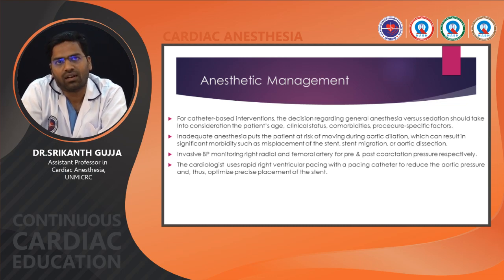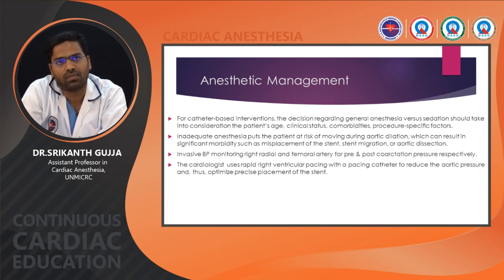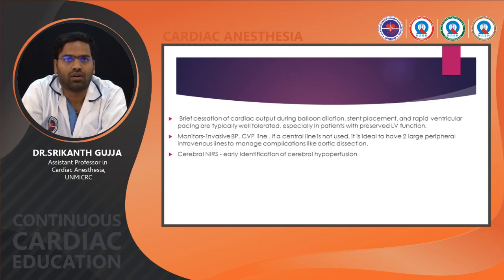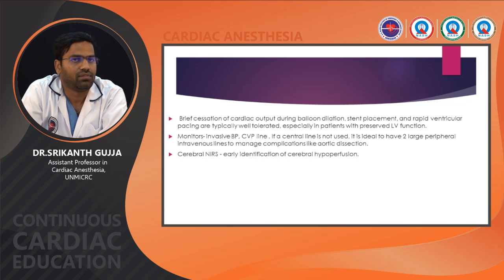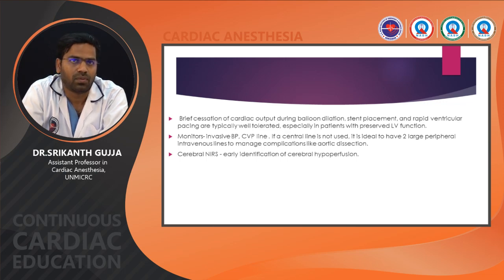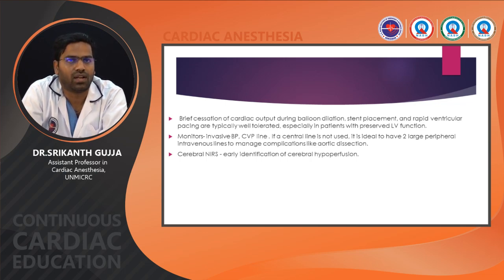Invasive BP monitoring should be placed in the right radial and femoral artery for pre- and post-coarctation pressure respectively. The cardiologist uses rapid ventricular pacing with a pacing catheter to reduce aortic pressure, helping optimize stent placement. Brief cessation of cardiac output during balloon dilatation and rapid ventricular pacing is typically well tolerated in patients with preserved LV function. Patients with severe LV dysfunction may go into VT, VF, or LV rupture during balloon dilatation. If a central line is not used, have two large peripheral IV lines to manage complications like aortic dissection or bleeding. Use cerebral NIRS for early identification of cerebral hypoperfusion.